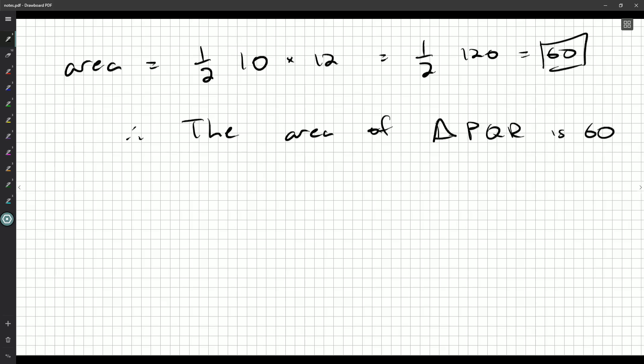But now the area, let's just calculate that. So we've got a base of 10 and a height of 12. So this is one half times 120. So the area of this triangle is 60. And if you want to, you could say therefore, the area of triangle PQR is 60. They don't have units, so we don't need units. But there we go. We've explained ourselves.